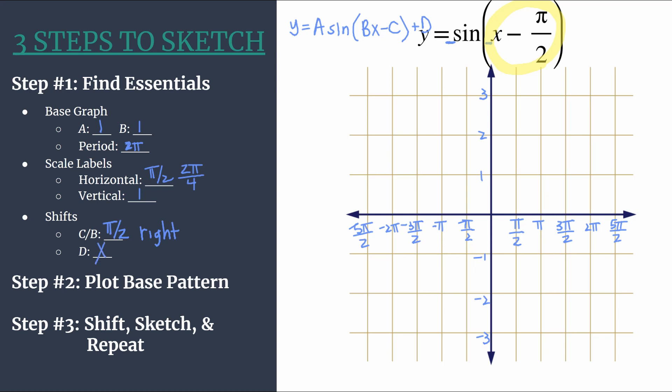And then D we don't have, it's an understood plus zero, so we don't have any vertical shifting going on with this graph. We've done the meat of what we need to do here.